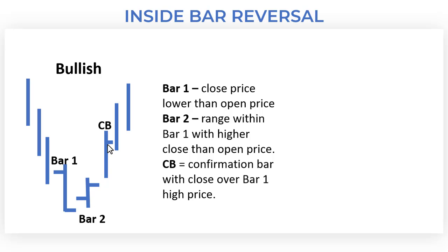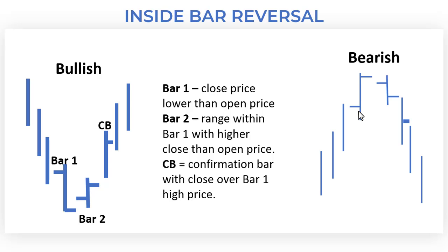Bar three has a confirmation close over bar one's high price. Of course, we also have the mirror image — the bearish inside bar reversal — where we have the inside bar and then the confirmation bar with the close lower than the bar one low price. Let's have a look at a couple of examples on a chart.